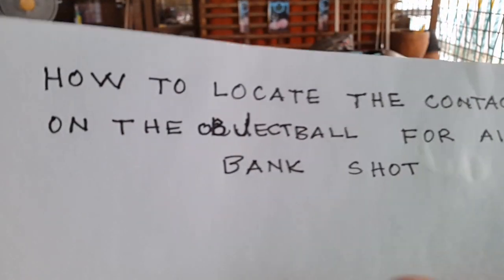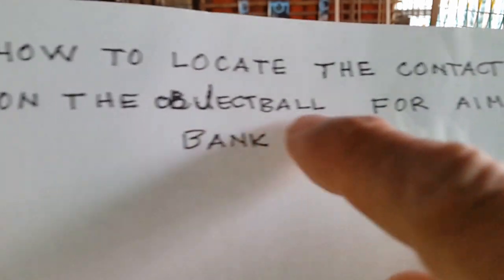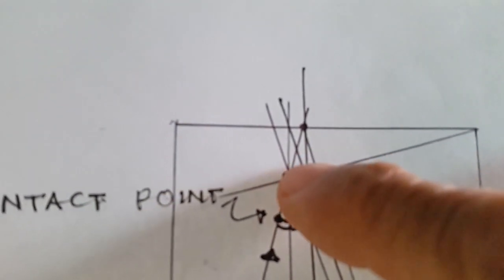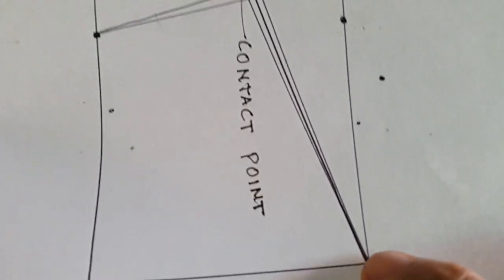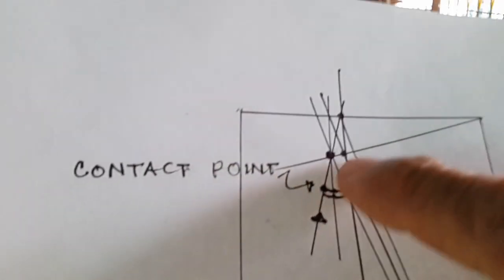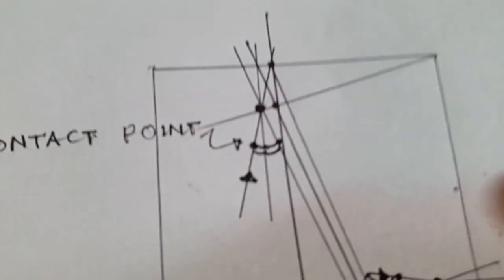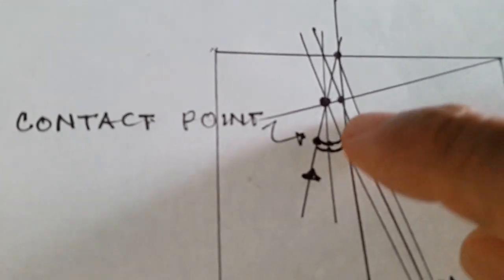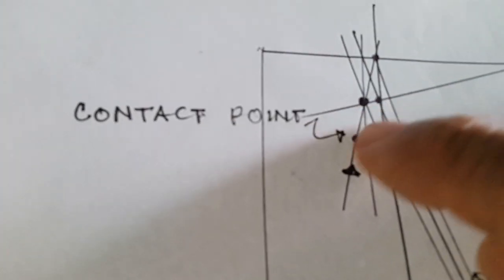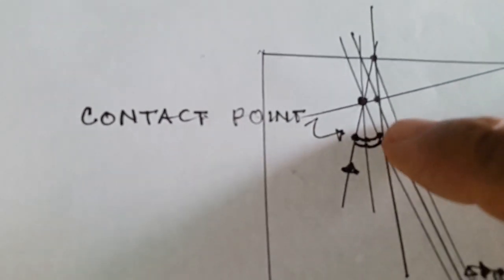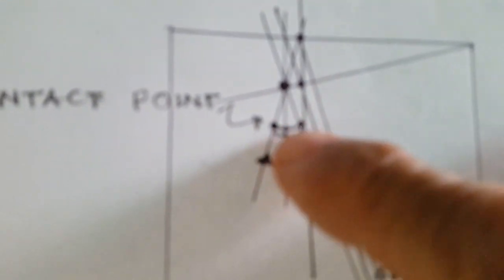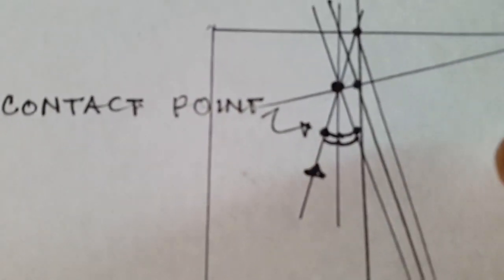Good day to everybody. Today I will be discussing the procedure on how to locate the contact point on the object ball for aiming in bank shots. If we want to bank this object ball to this railing, to this pocket, what we will do is to pass a line through this pocket directly to the center of this object ball. We then note the position of this point — the intersection of this line with the circumference of the object ball. We then copy that position and transfer it to the other side of the object ball.